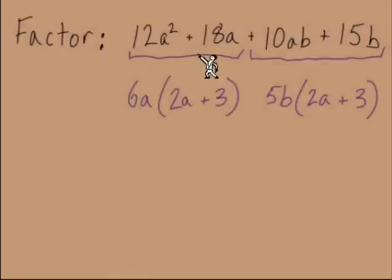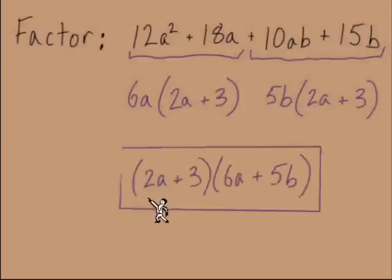Okay, so pairing up the first two, I see a GCF of 6a, and in parentheses, 2a plus 3. From the second pair, these last two terms, the GCF is 5b, and in parentheses, 2a plus 3. So we're ready to get right to the end of this problem. It's 2a plus 3 is the first factor, 6a plus 5b the second factor.